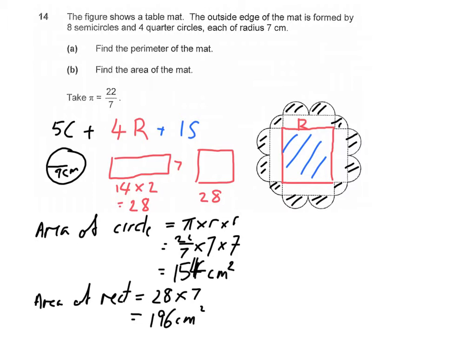And lastly, we have the area of the square, which is 28 times 28. That will give us 784 cm².